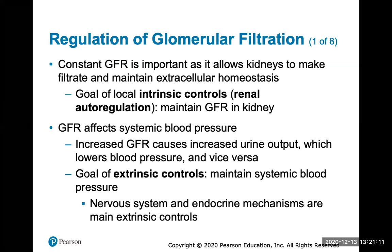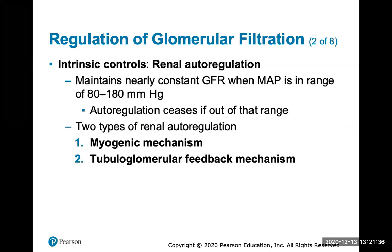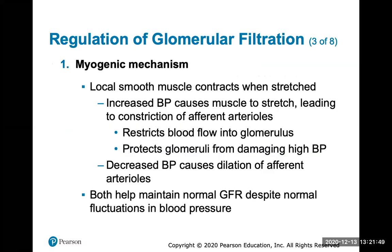The goal of local intrinsic control is to maintain a constant glomerular filtration rate. This rate affects systemic blood pressure — an increased rate causes increased urine output, which lowers blood pressure, and vice versa. The goals of extrinsic controls are to maintain systemic blood pressure. There are two types of intrinsic renal autoregulation: the myogenic mechanism and the tubuloglomerular feedback mechanism.